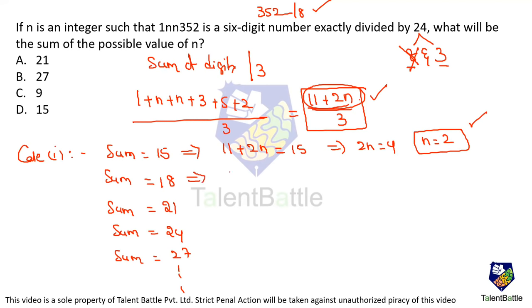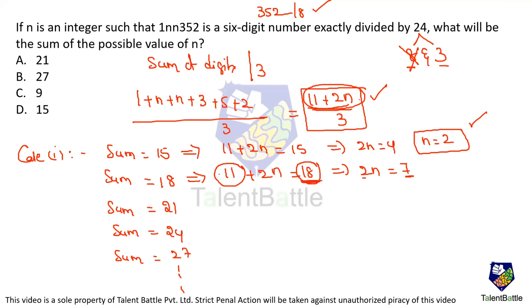What will happen if I consider the sum as 18? 11 plus 2n equals 18, so n will be 7 divided by 2, which is a decimal. We can't consider this. A small logic: 11 is odd, if you subtract it from an even number you get odd, and dividing odd by 2 gives a decimal. So even multiples like 18 and 24 are not necessary — you will get decimal answers. So let's leave this case.